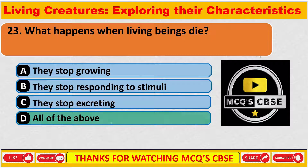What happens when living beings die? The correct answer is D — all of the above: they stop growing, they stop responding to stimuli, and they stop excreting.